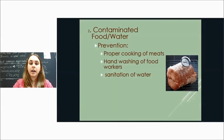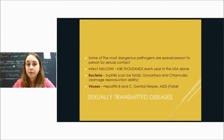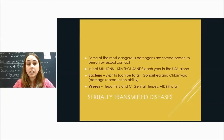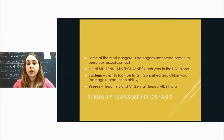Some of the most dangerous pathogens are spread through sexual contact — called sexually transmitted diseases or infections (STDs or STIs). They infect millions and kill thousands each year in the USA alone. Examples of bacterial STDs are syphilis (which can be fatal), gonorrhea and chlamydia (which can damage your ability to reproduce), and viral examples include hepatitis B and C, genital herpes, and AIDS, which can be fatal. It is very important to protect yourself.